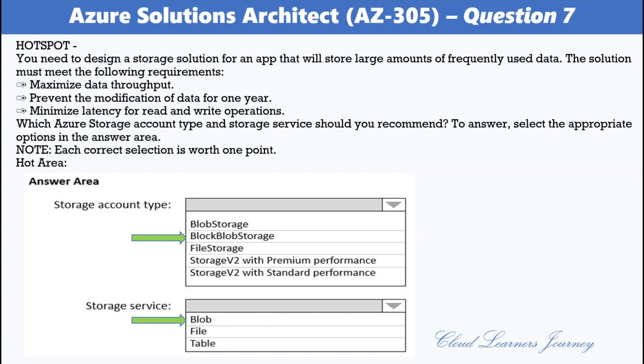The archive tier is an offline tier for storing blob data that is rarely accessed. It offers the lowest storage cost but higher data retrieval cost and latency compared to the online tiers.